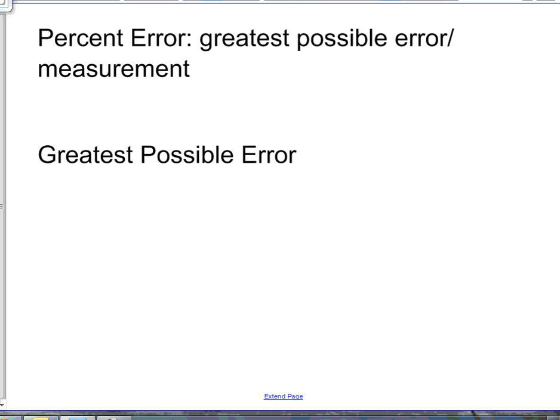So for example if I had let's say 3.8, my greatest possible error could go 0.05 this way.